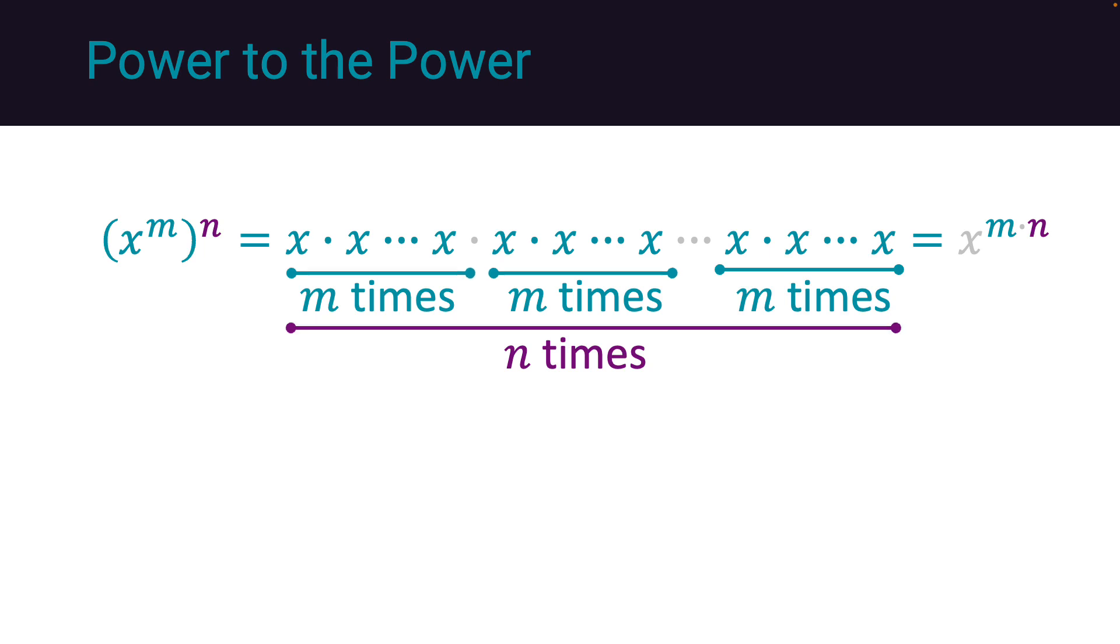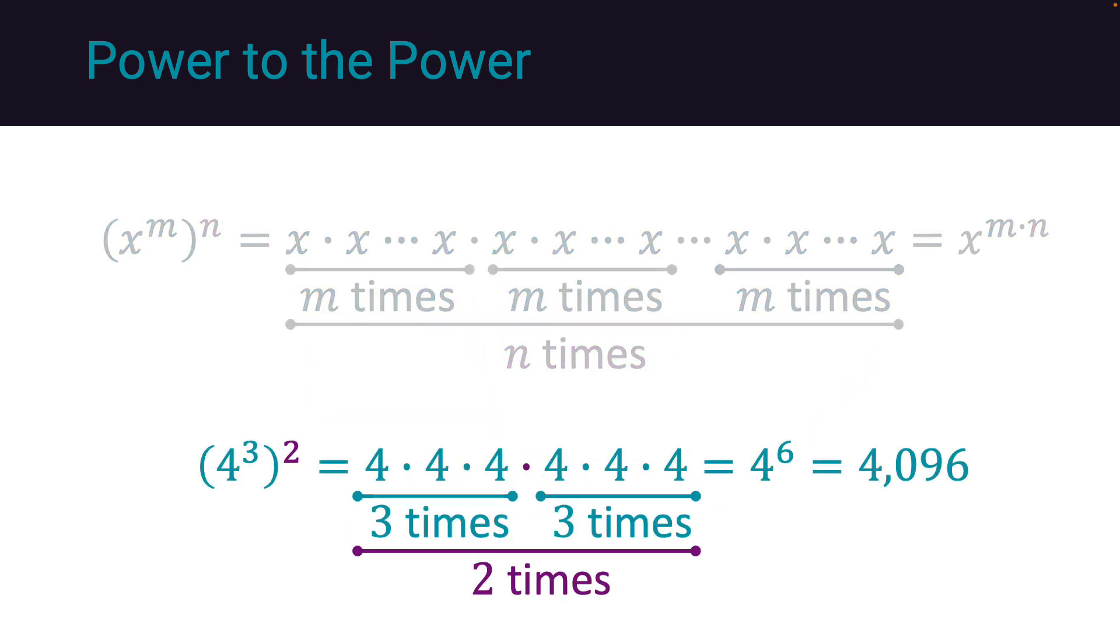An example is 4 to the power 3 to the power 2, which is 4 multiplied by itself 3 times, and this in turn is multiplied twice. This produces 4 to the power of 6, which is 4096.